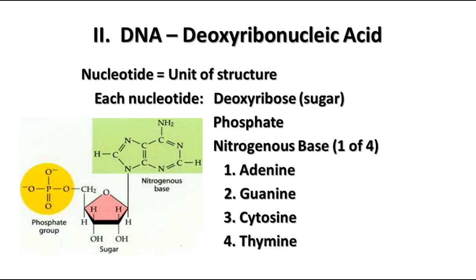The unit of structure of DNA is a nucleotide. Each nucleotide is composed of three parts: deoxyribose, which is a five-carbon sugar; a phosphate group; and one of four nitrogen bases. The four bases found in DNA are adenine, guanine, cytosine, and thymine.